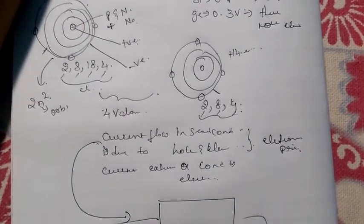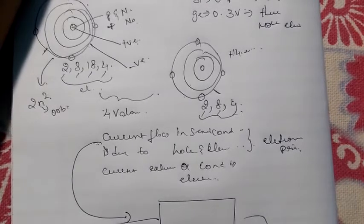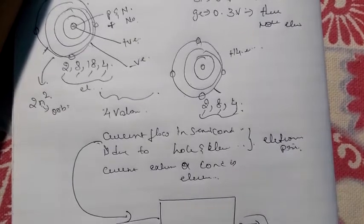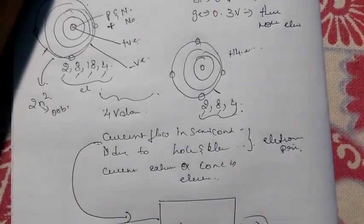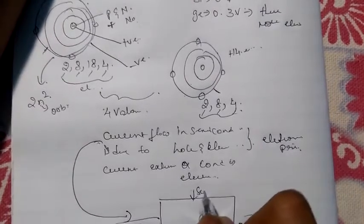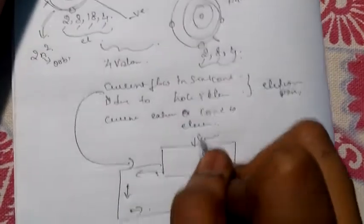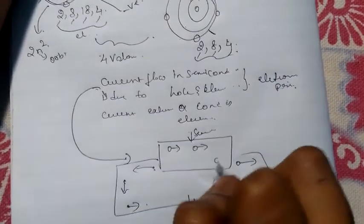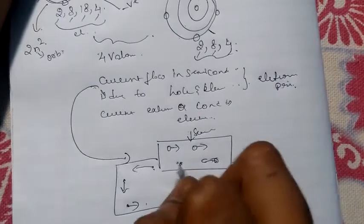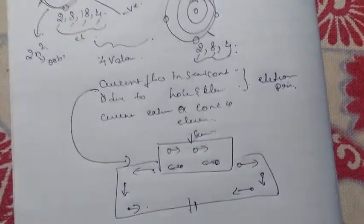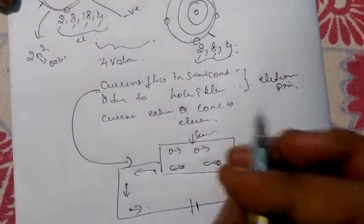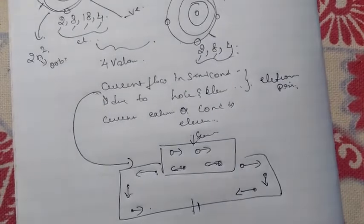Holes are positively charged particles which flow towards the negative terminal of the supply. In the semiconductor material, holes flow in one direction and electrons flow in the opposite direction, so current flow in a semiconductor is due to both holes and electrons.